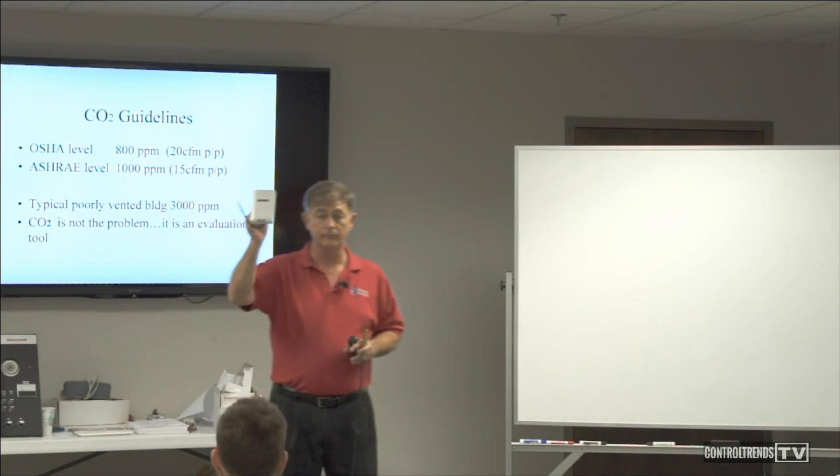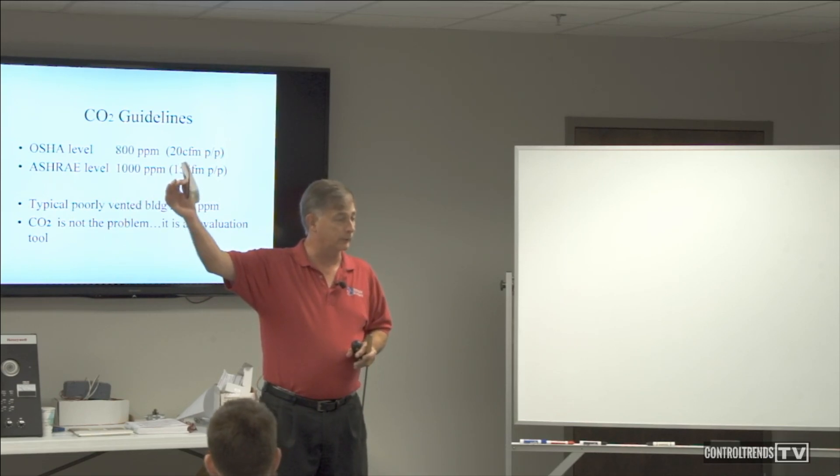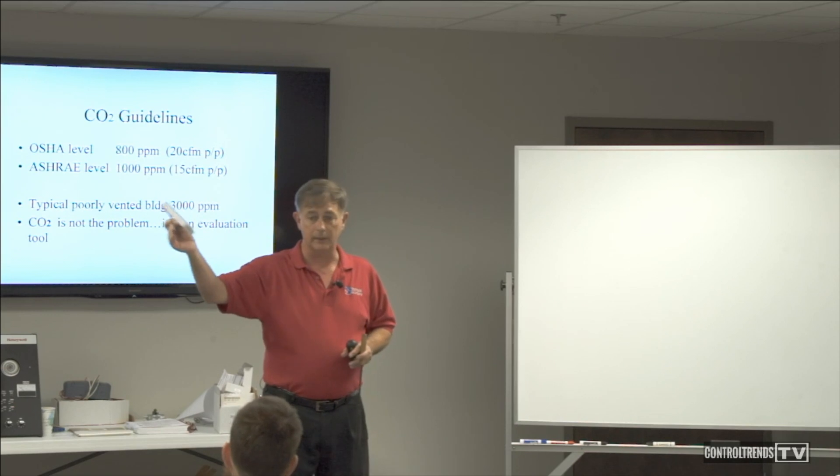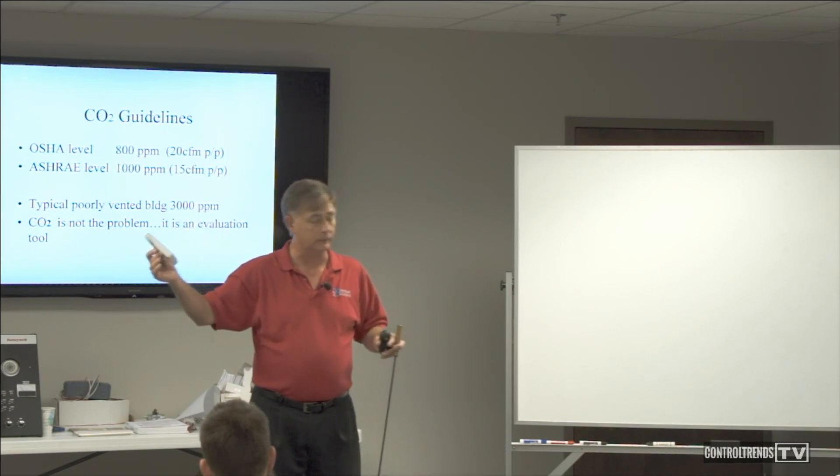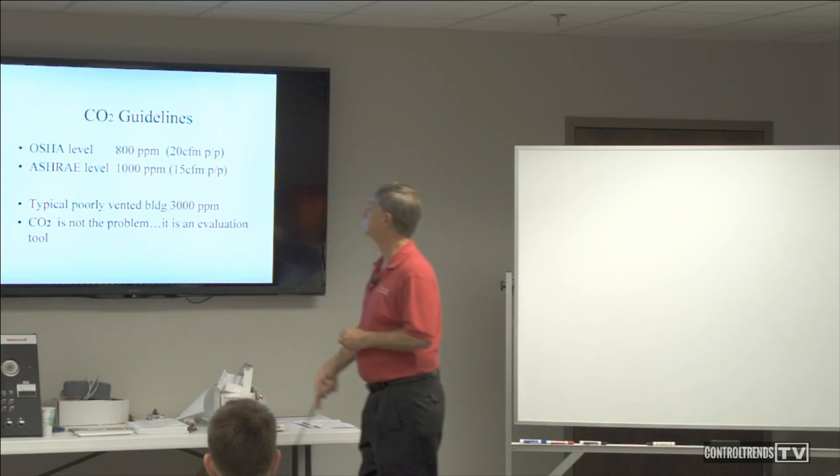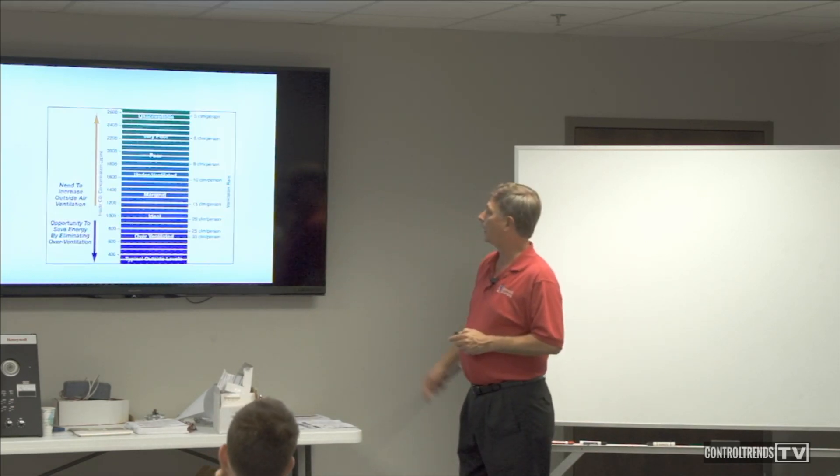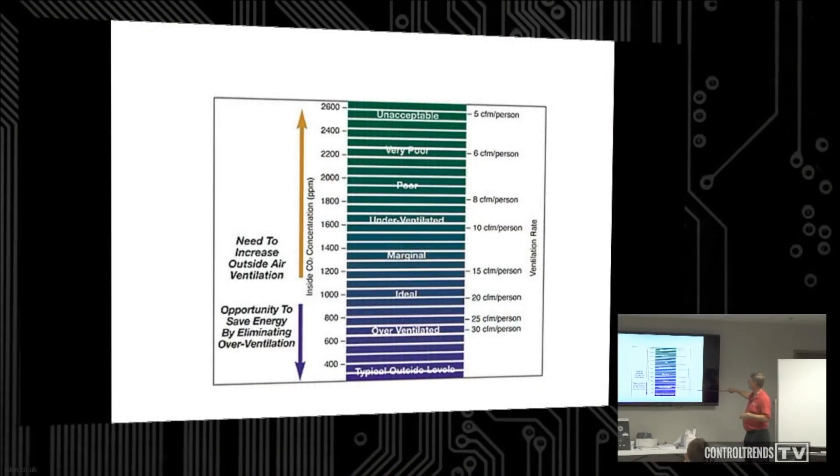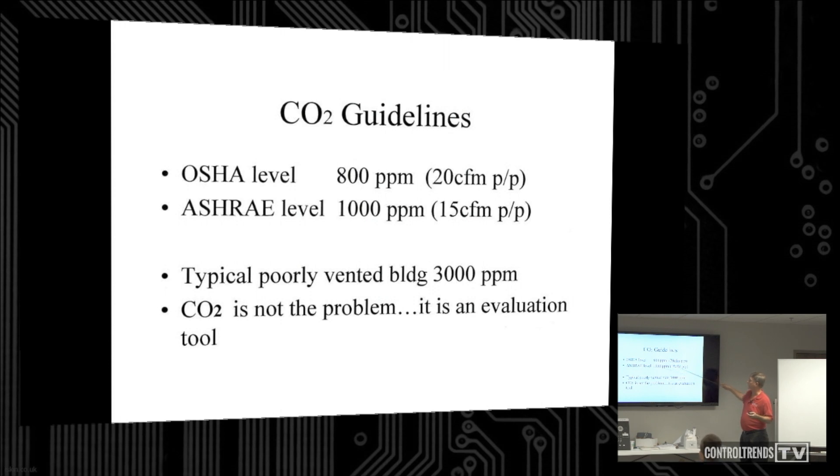CO2 sensors - integrate that with automation so the automation knows what the level is in this general area, and then we can respond accordingly to the system. If you have this in your handout, this is a good reference. We tend to hear a common term thrown around: we want to have about 20 CFM per person. If you equate that to your parts per million that we saw, 800 and 1,000, you see 800 is like 20 CFM, 1,000 is 15 CFM per person ventilation.